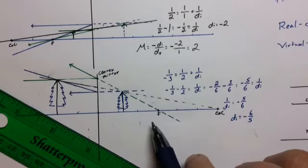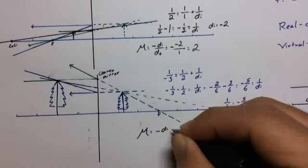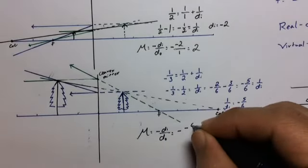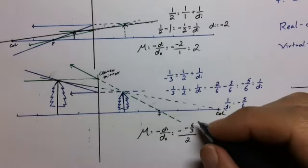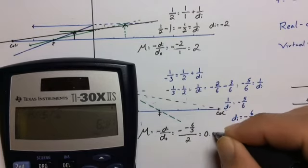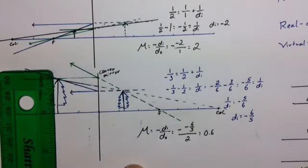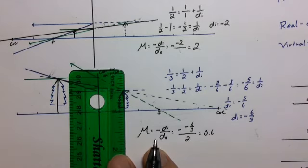Looking at the magnification: m = −d_i/d_o = −(−6/5)/2 = (6/5)/2 = 0.6. So the image is 60% the size of the object. Looking at the diagram, the object is about an inch and the image is a little more than halfway — right around there. The math works out perfectly.